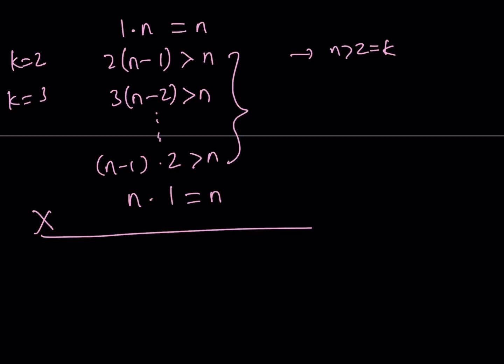When we multiply everything together, the left-hand side gives 1, 2, 3, ..., n times n, n minus 1, ..., 1, which is n factorial times n factorial, i.e., n factorial squared. Since we have n rows on the right-hand side, each contributing n, the right-hand side becomes n to the power of n. So we've proved the general inequality: n factorial squared is greater than n to the n.